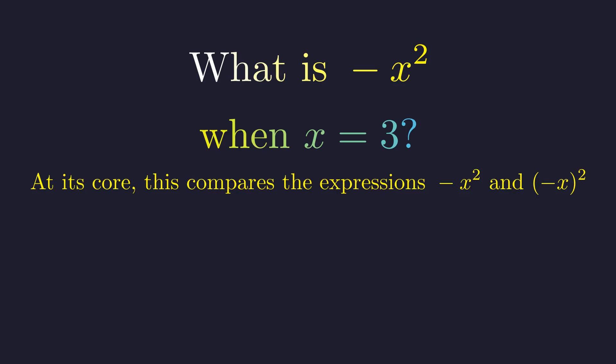The heart of this problem comes down to understanding two very different expressions. We have negative x squared, and then we have the quantity negative x, all squared. These look nearly identical, but they're actually quite different mathematically.